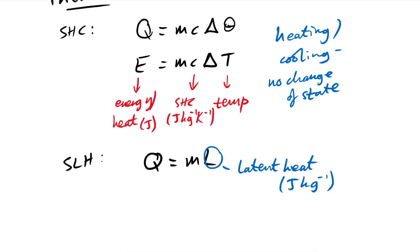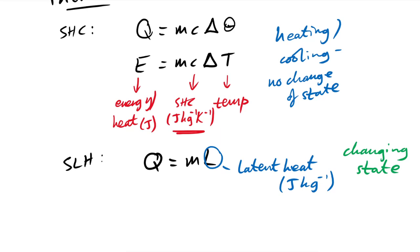SHC definition: energy required to raise unit mass of a substance by unit temperature change. Specific latent heat definition: energy required to change the state of unit mass (in J/kg). There are two types: specific latent heat of fusion (melting/freezing) and specific latent heat of vaporisation (boiling/condensing).